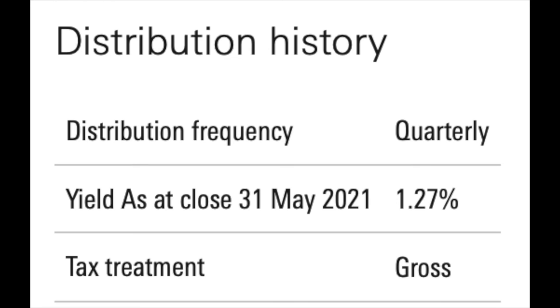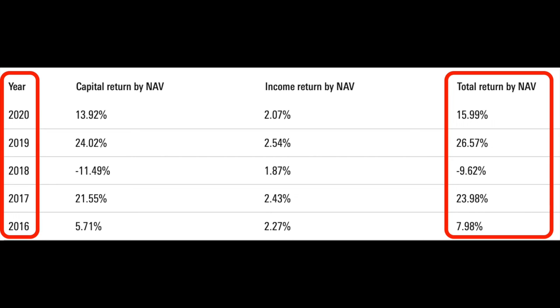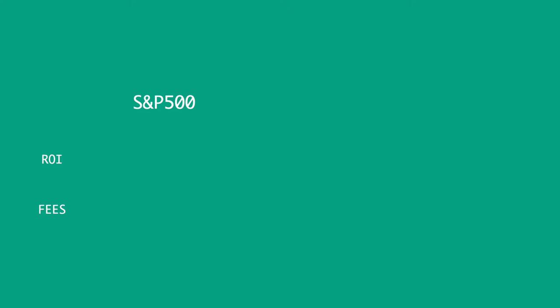This certainly mitigates a lot of risk within a portfolio, but let's see whether that comes at the expense of return on investment. The fund pays a quarterly dividend of 1.27%, which is slightly more than the S&P 500 ETF but not quite as much as the FTSE 250 ETF. When we look at returns, they're actually pretty impressive — over the past five years the total return on investment has been 64.9%, an equivalent rate of return of 12.98% per year. So now let's recap these three funds: the S&P 500, the FTSE 250, and the All World index.